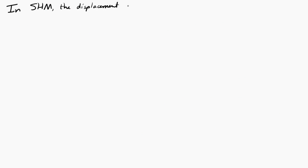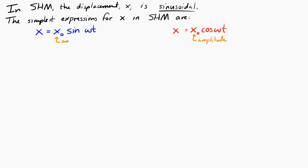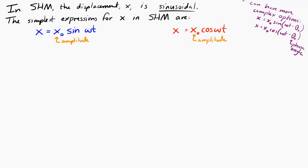When we think about simple harmonic motion, we know that the displacement from equilibrium has to be sinusoidal. The two simplest possible expressions for displacement in simple harmonic motion are using a sine or using a cosine. In each case, x0 represents the amplitude of the displacement. There are more complicated options if we added in a phase angle, but we're not going to worry about those right now.